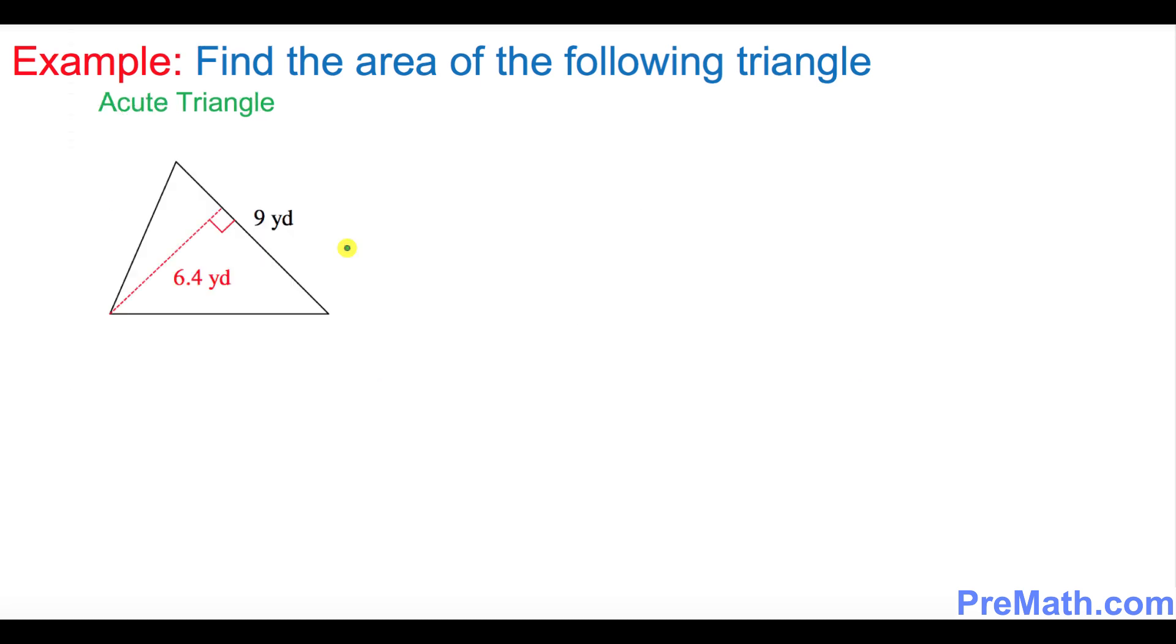In this next example we are going to find the area of this acute triangle—that means all these angles are less than 90 degrees. Here, this side is base, 9 yards, and this dotted line is the perpendicular height that makes a 90-degree angle. This is 6.4 yards.